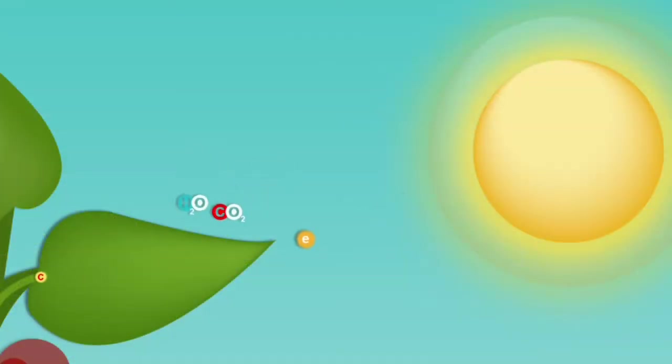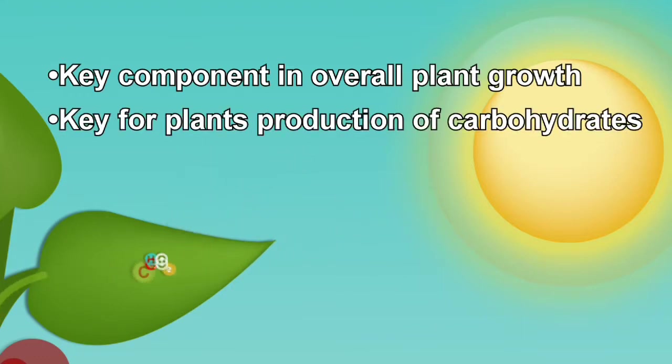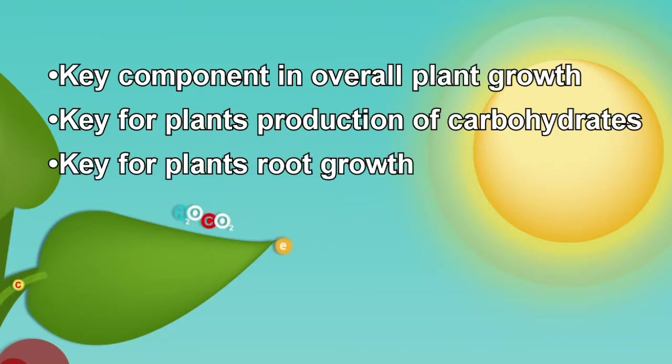Photosynthesis is the plant's ability to build and store carbohydrates. From the time water and heat is added to the seed until the death of the plant, enzymes and aerobic bacteria respirate using O2 and simple sugars to grow. Key component in overall plant growth, key for plant's production of carbohydrates, and key for plant's root growth.